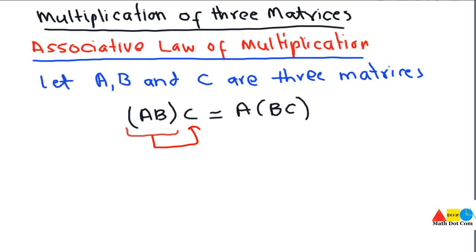You can multiply the second and third matrices together and the result will be multiplied with the first one. This is how you can multiply three matrices together. If you are given three matrices, you can apply the associative law of multiplication. First of all, while multiplying we have to check the condition whether the given matrices are compatible for multiplication or not.